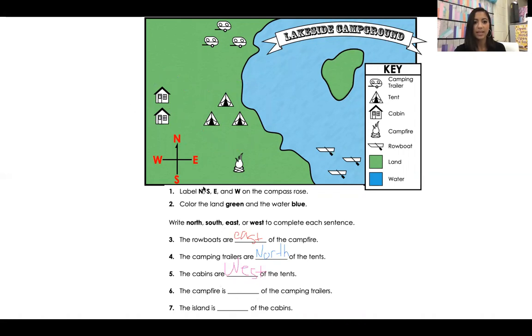The campfire is blank of the camping trailers. So here are the camping trailers. The campfire is north of the camping trailers, east of the camping trailers, west, south of the camping trailers. The campfire is south of the camping trailers.